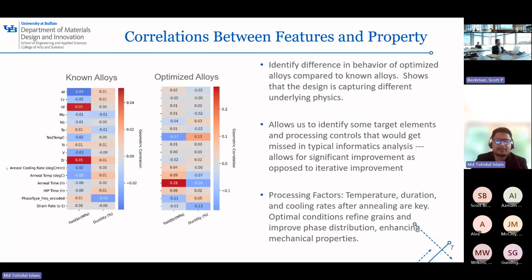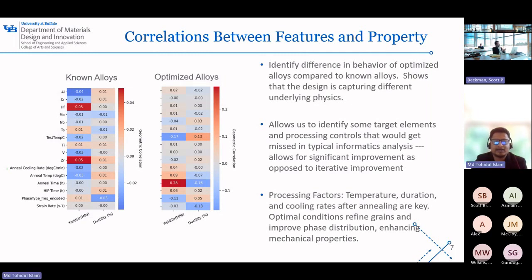Now let's look at the correlation between the features of our materials and their properties. We can see two heat maps here — they compare the known alloys to the ones we have optimized. The contrast tells us how our optimized alloys behave differently from the known alloys, and that hints that we have tapped into a new aspect of materials physics.